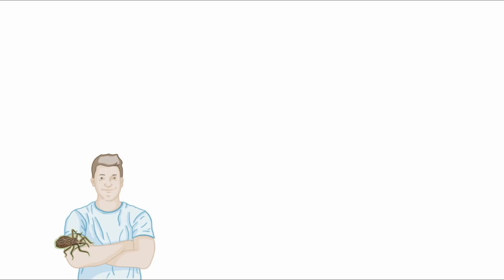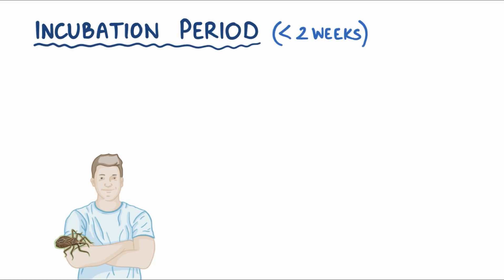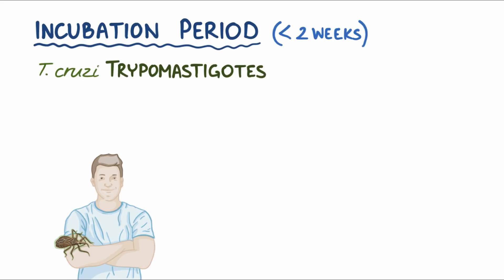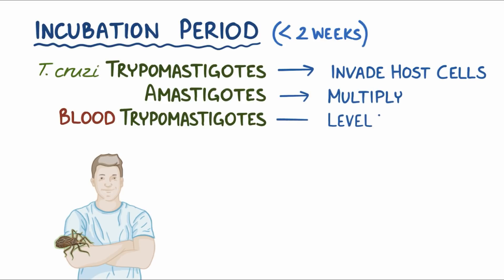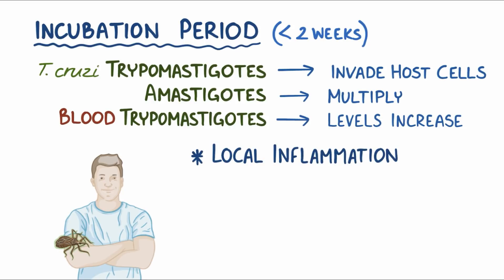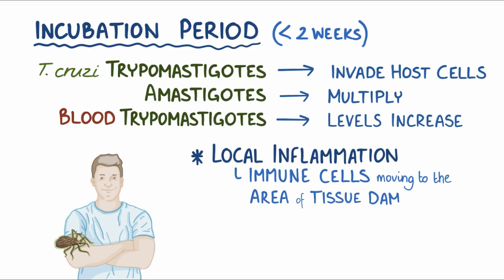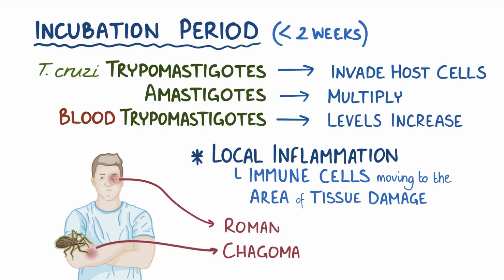When a person is infected with Chagas disease, there is initially an incubation period of up to two weeks. During that incubation period, T. cruzi tripomastigotes invade host cells, amastigotes multiply, and blood tripomastigote levels start to increase in the blood. Usually there's local inflammation as immune cells move toward the area of tissue damage. When this happens at the bite site, it's called a chagoma, and when it happens around the eye, it can cause eyelid swelling which is called Romaña's sign.